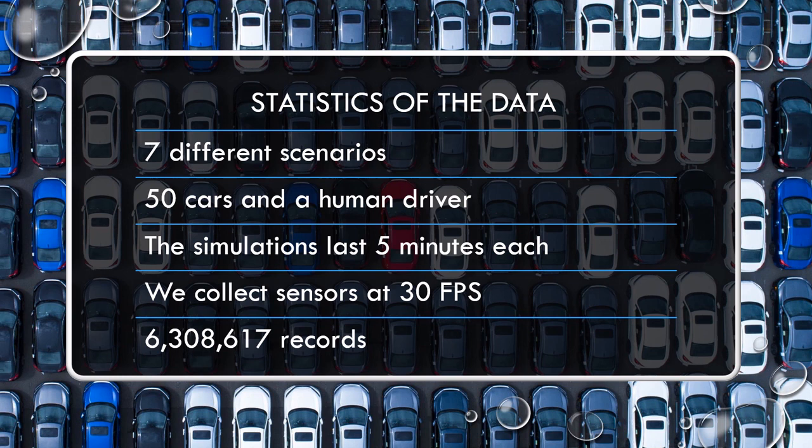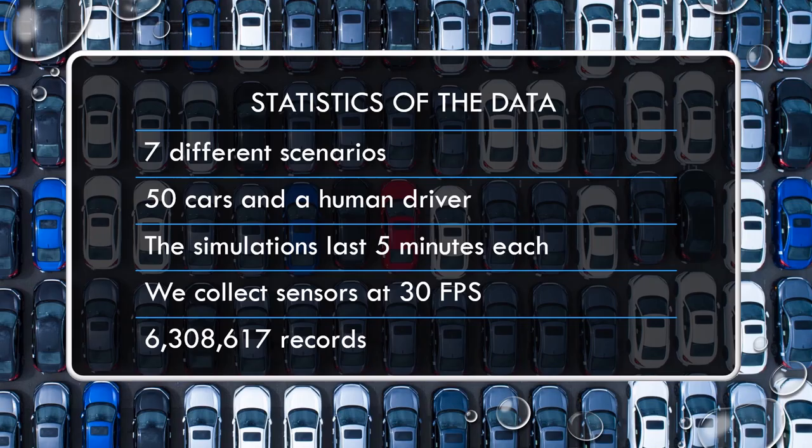Related to the data, we have seven different scenarios for our experiments. We will have 50 cars created inside CARLA driven by the traffic manager — these behave like smart cars. We will have one human driver. The simulation lasts five minutes, collecting sensor information every frame at 30 frames per second. Five minutes, 30 frames per second, multiple sensors — the amount of data is huge. In this case we have about six million records from the sensors.